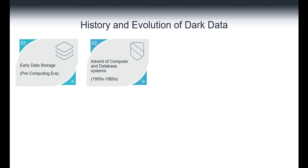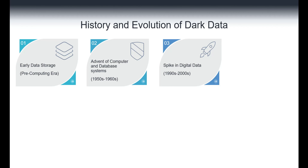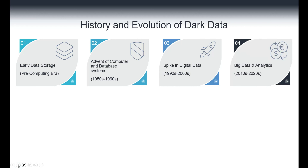Then the advent of computers and database systems came, marking the beginning of structured data storage where information was organized into tables and records for more efficient data management. After that, during the 90s and 2000s, widespread adoption of the internet, advances in computing power, and digitization across industries led to an explosion of data generation. This era saw an increase in volume, velocity, and variety of data, laying the groundwork for the accumulation of dark data.